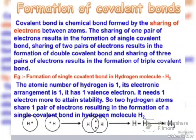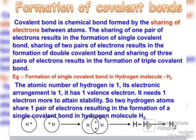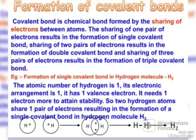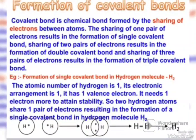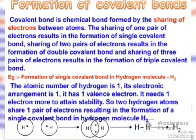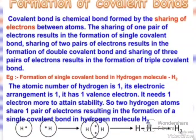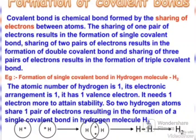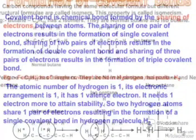When it comes to the formation of the carbon covalent bond, a covalent bond is a chemical bond formed by the sharing of electrons between atoms. The sharing of 1 pair of electrons results in the formation of a single covalent bond. Sharing of 2 pairs of electrons results in a double covalent bond, and sharing of 3 pairs of electrons results in a triple covalent bond. For example, we can take the formation of a single covalent bond in hydrogen molecules, i.e., H2. You can see in the diagram how the H2 molecule is formed.